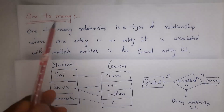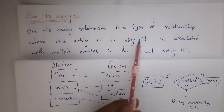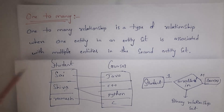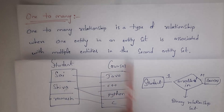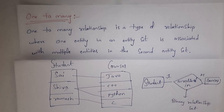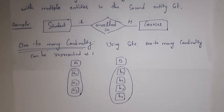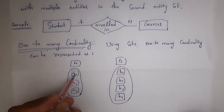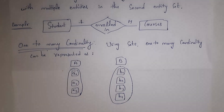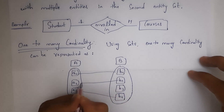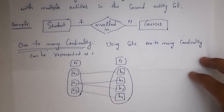Next is one-to-many relationship — one entity in an entity set is associated with multiple entities in the second entity set. In the student entity set, entity Shiva participated multiple times in the courses entity set, selecting both C++ and Python. One student selected multiple courses, so this is a one-to-many relationship. We represent one-to-many cardinality using sets: A1 and A3 each connect to one course, while A2 connects to both B2 and B3.